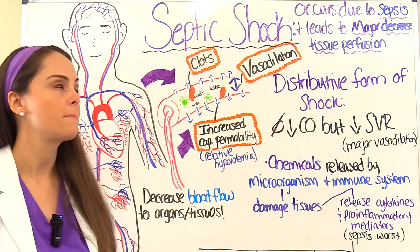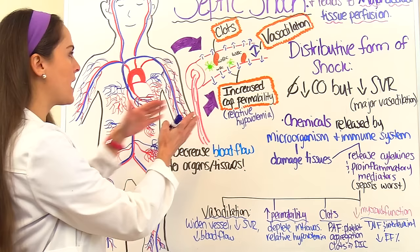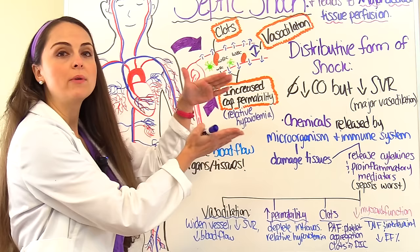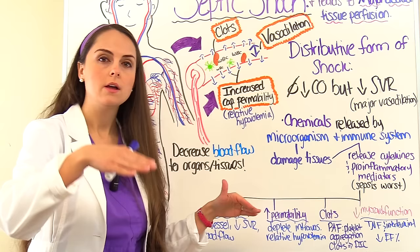These chemicals lead to vasodilation — the vessels system-wide open up and blood begins to pool rather than flow effectively. This limits the amount of blood flow going to those cells, leading to our decreased systemic vascular resistance. In addition, these chemicals change the permeability of these vessels and make them leak.